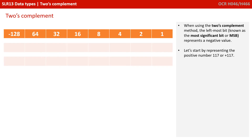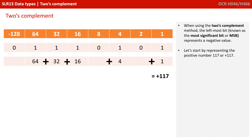Now we've changed our weighting line, let's try representing the positive number 117. It's a positive number, therefore the most significant bit must be a 0. Then, like we've shown in the previous video, we place 1s in every column we need: a 1 in the 64 column, plus 32, plus 16, plus 4, plus 1 — and we have positive 117.